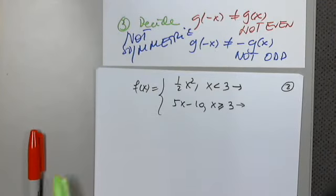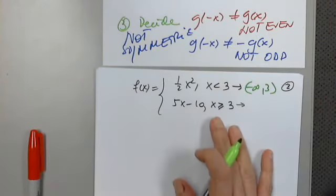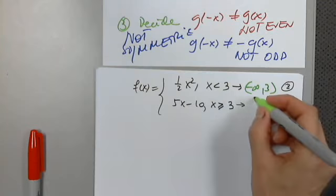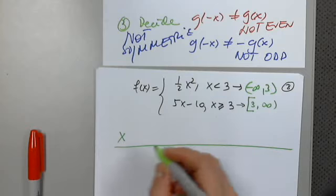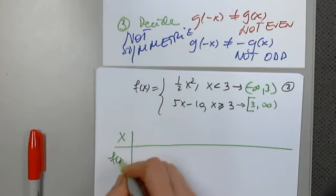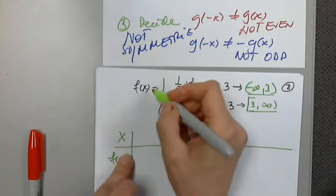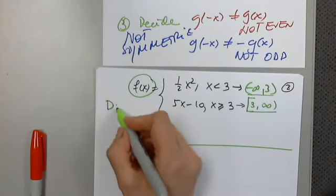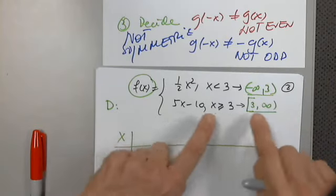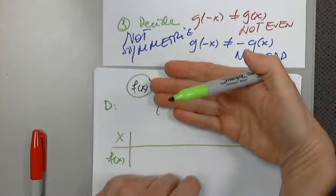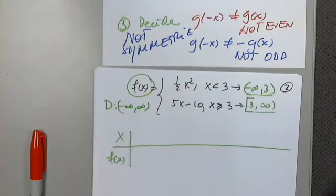The interval notation for the first piece is negative infinity to 3 — perfect. For the second piece, it's bracket 3 to infinity. Now I'd like to identify the domain of the entire function. Looking at both intervals together, the domain is all real numbers.